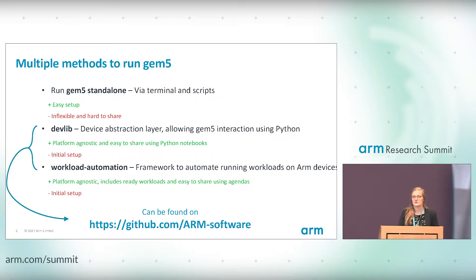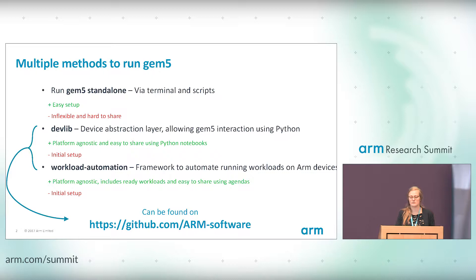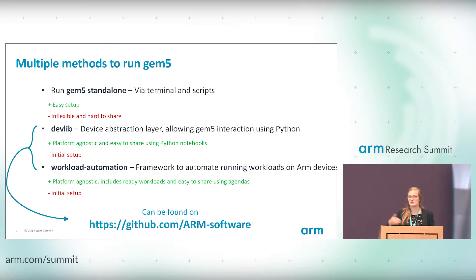Then there's Workload Automation. Workload Automation is an existing framework used to run workloads on ARM devices, and GEM5 is now seen as an ARM device, so you can automatically run workloads on GEM5. It's platform agnostic. Another advantage is that workloads are already included — you have the binaries for certain workloads. Workload Automation is configured using agendas, so you can share those agendas and know exactly what somebody else is doing.